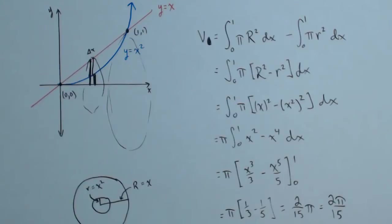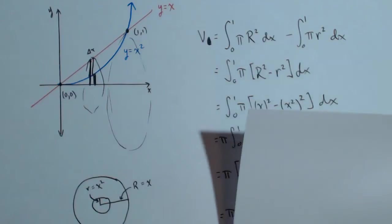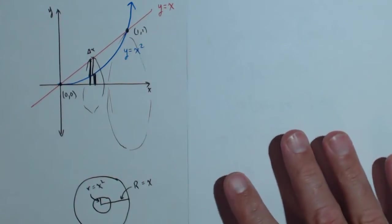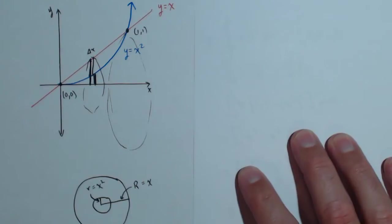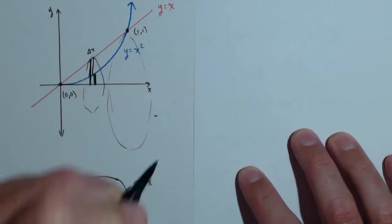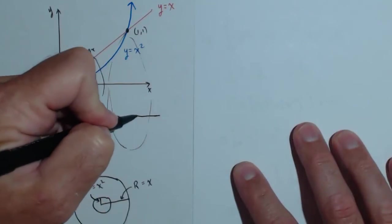Now, while I have this drawing, I want to change this one up just a little bit. So let me get some fresh paper here. What if we wanted to rotate this around a horizontal axis that's not the x-axis? For instance, what if I wanted to rotate it around the line y equals 1?